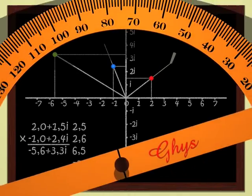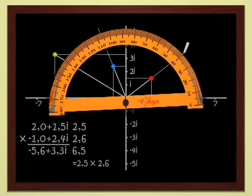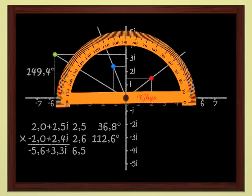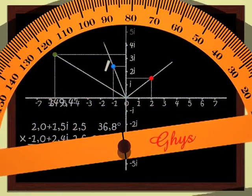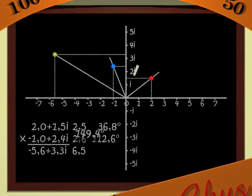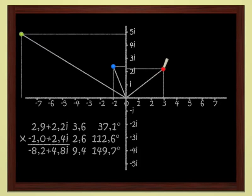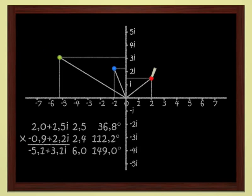The argument of a complex number is measured by the angle between the abscissa axis and the straight line joining the origin to the point. The argument of the red point is 36.8 degrees. The argument of the blue point is 112.6 degrees. And for the product, the green point, we get 149.4 degrees. That is, the sum of the arguments of the two numbers. When we multiply two complex numbers, moduli are multiplied and arguments are added.